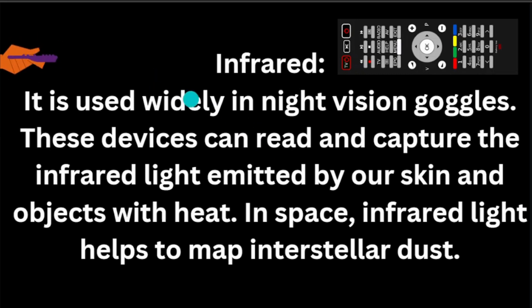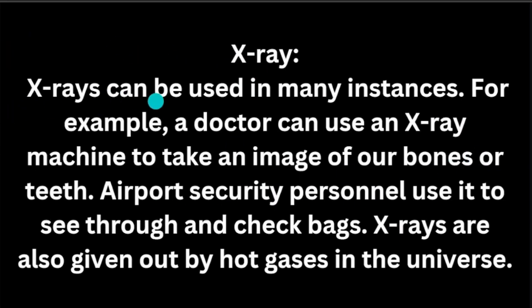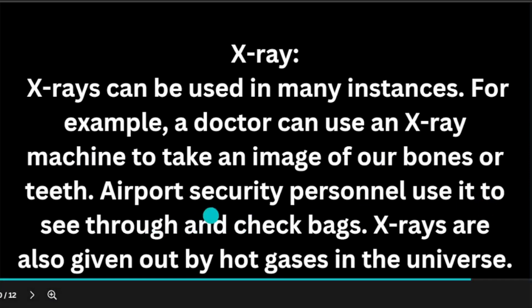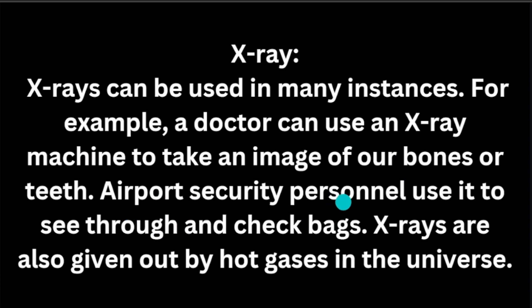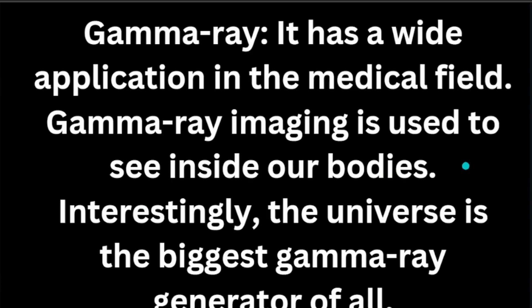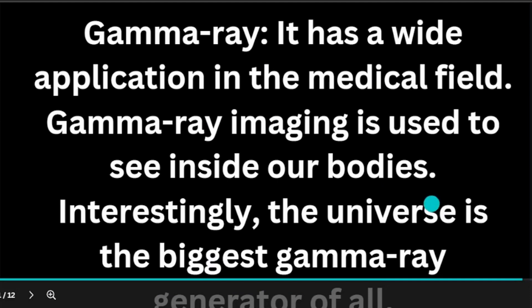X-rays we know. For example, a doctor can use an x-ray machine to take an image of our bones, or airport security personnel use it to see through and check bags. Then we have gamma rays. It has wide application in the field of medical science and gamma ray imaging is used to see inside our body. Space is the biggest gamma ray generator.